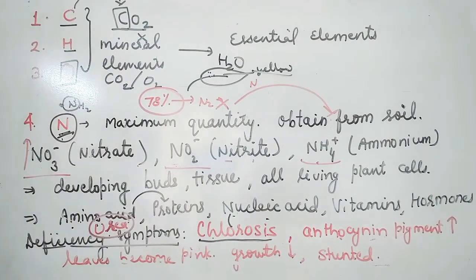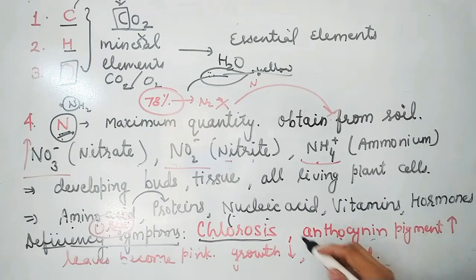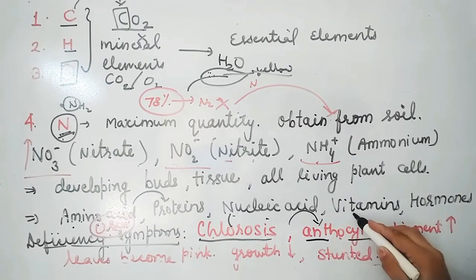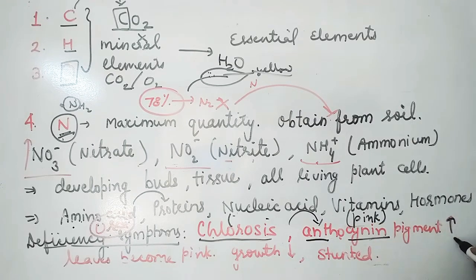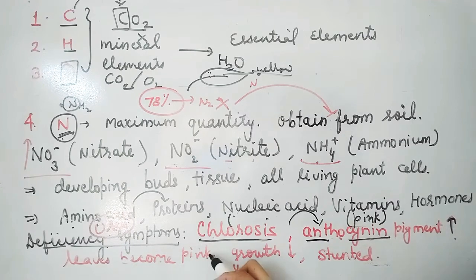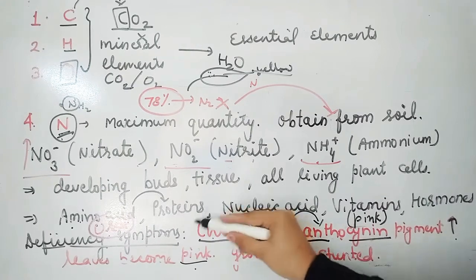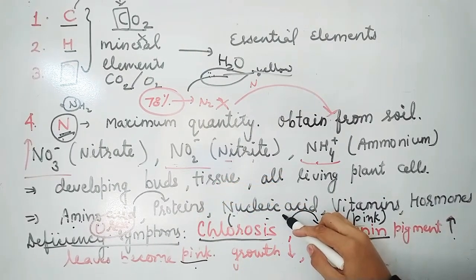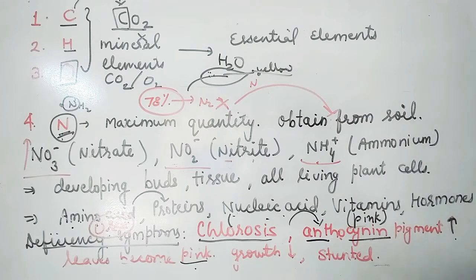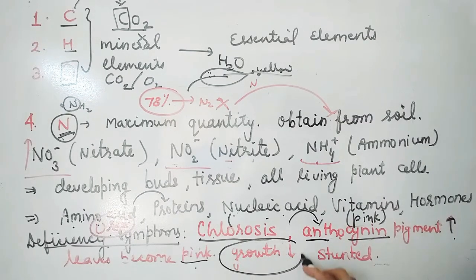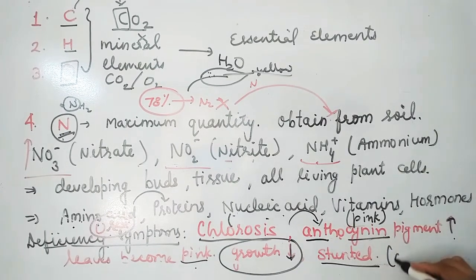When chlorosis occurs, anthocyanin — a pink color pigment — is formed, causing the leaves to turn pink. Additionally, since nitrogen is an essential component of proteins and amino acids needed for growth, nitrogen deficiency results in stunted growth and the plant becomes dwarf.